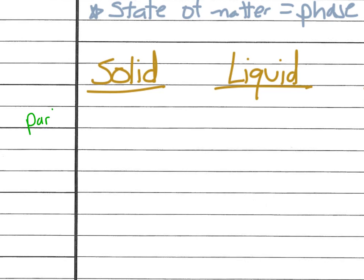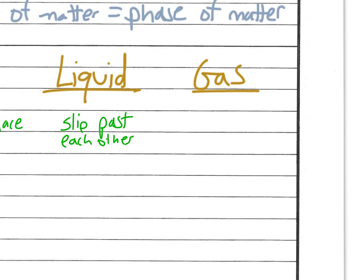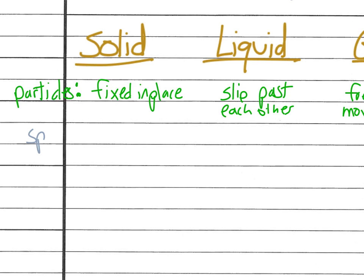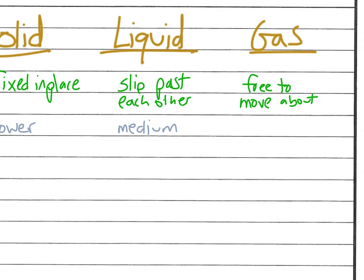Alright, so let's first talk about the particles in a solid and a liquid and a gas. The particles in a solid are fixed in place. The particles in a liquid can slip past each other. And the particles in a gas are free to move about. They're all moving though, so let's compare their speed. As far as solids go, they are slower. Liquids are medium. And then for our gases, those are nice and fast.